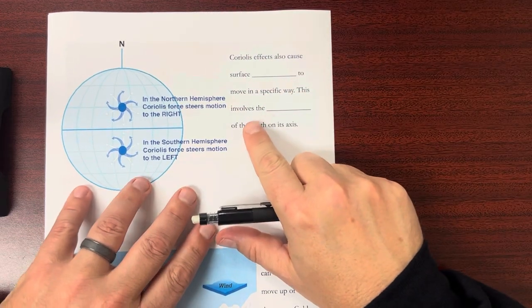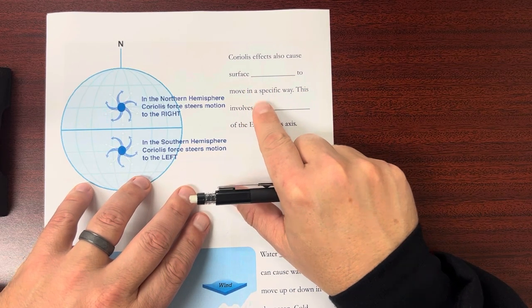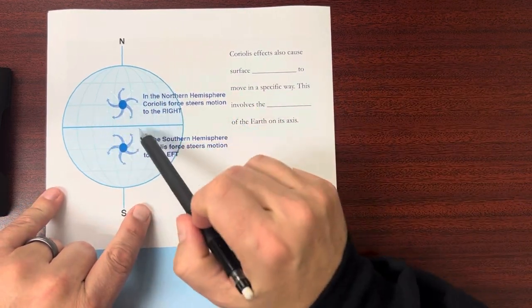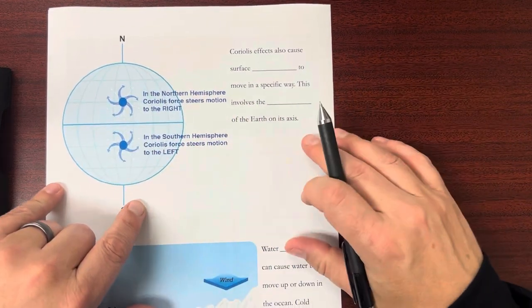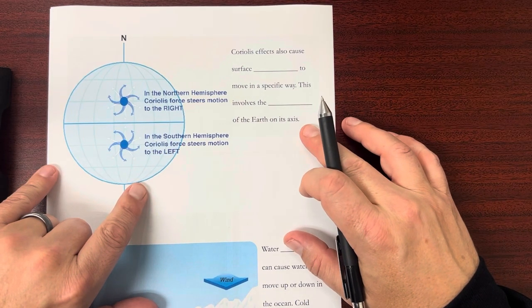So Coriolis effect also cause surface currents to move in a specific way and we see that here the directions depending on whether you're in the northern hemisphere or southern hemisphere. This involves the rotation of the earth on its axis.